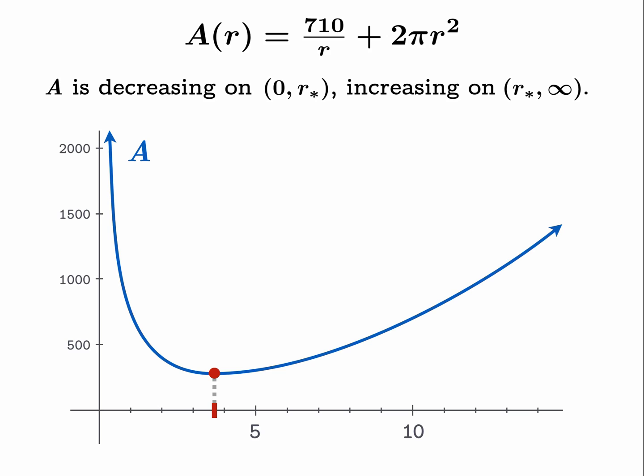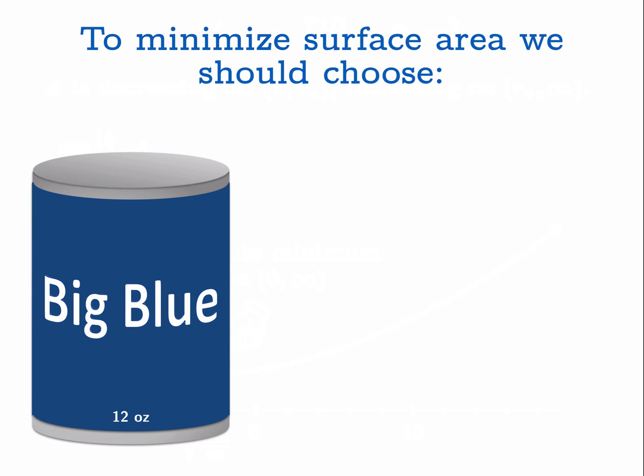If we go back to the original graph and think about what we just did, we figured out that on this interval from 0 to r star the graph is decreasing, and then from r star to infinity it's increasing. So not only is this a local minimum, it is the absolute minimum on the whole domain.